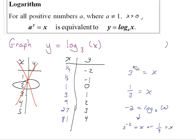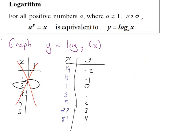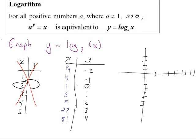Let's take a look at the graph of y equals log base 3 of x by plotting these points. On the x-y axis, when x is 1 the output is 0. Interestingly, since a to the 0 always equals 1, this point (1, 0) will be on any log graph. When x is 3 the output is 1, and when x is 9 the output is 2.